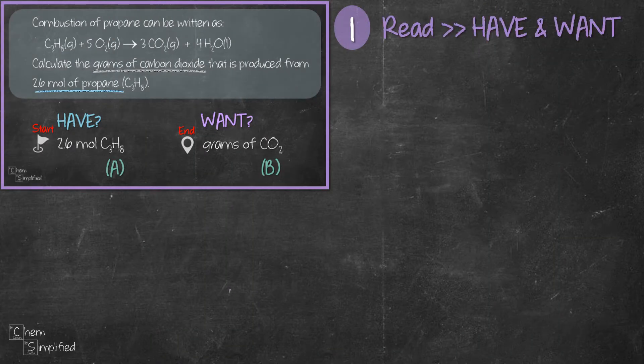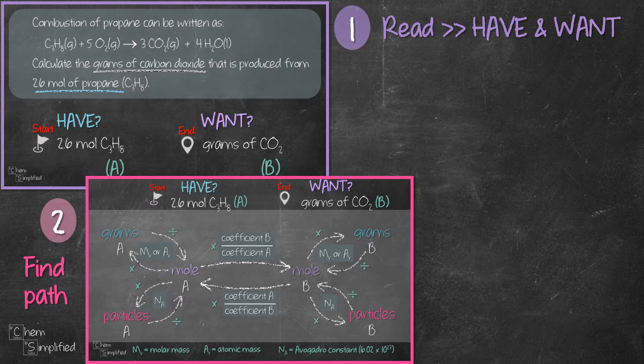To recap, we start off by reading the question to figure out what is the information that we have and what does the question want us to find. And then we figure out the pathway using the stoichiometry plan.